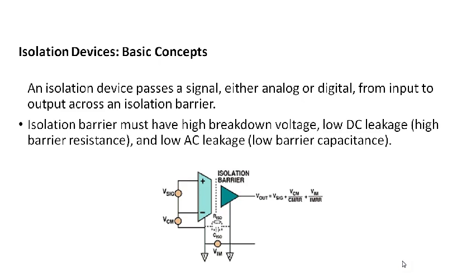An isolation device passes a signal — either analog or digital — from input to output across the isolation barrier. Key parameters of the isolation barrier include: high breakdown voltage, low DC leakage (high barrier resistance), and low AC leakage (low barrier capacitance, CISO). The voltage output is affected by common mode voltage and isolation mode voltage VIM, isolation resistance RASO, and isolation barrier capacitance CISO.